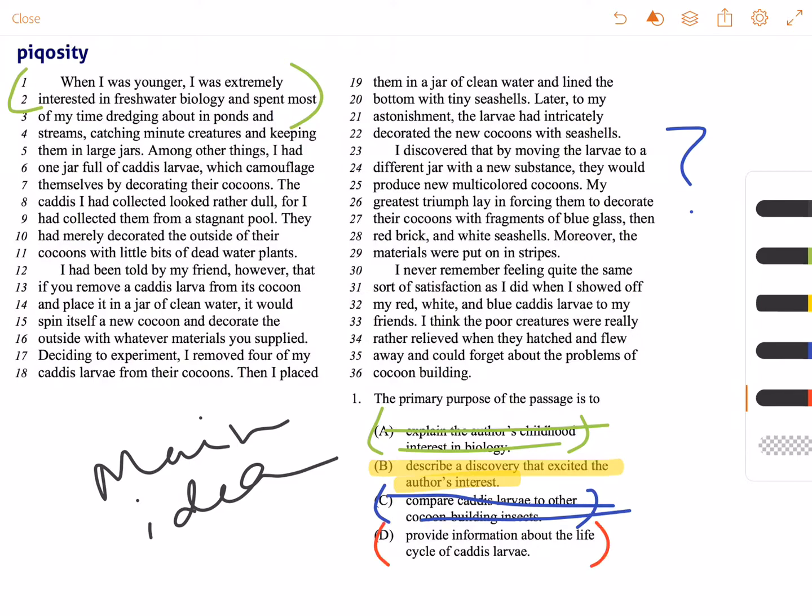And then D: Provide information about the life cycle of caddis larvae. Not anywhere in this passage does he talk about life cycles, so this one's pretty easy to knock out as well.